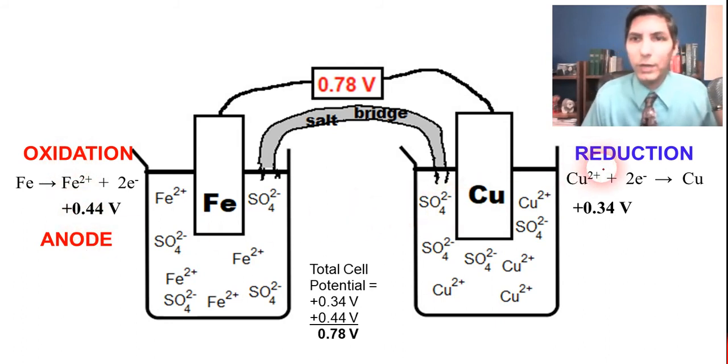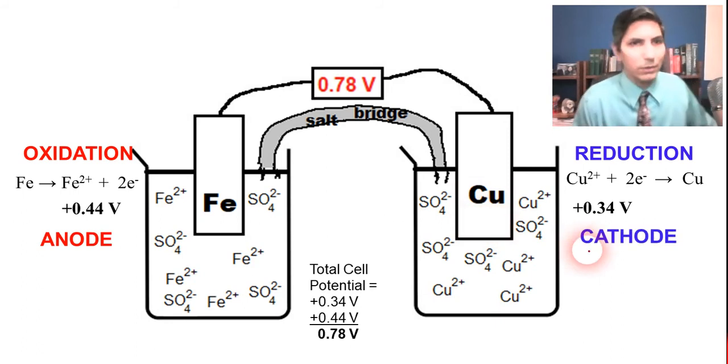Now, over here, we have reduction. And reduction - well, this piece of metal right here, since there's reduction taking place there, we call that the cathode. That's just how it works. Oxidation always takes place at the anode, and reduction always takes place at the cathode.